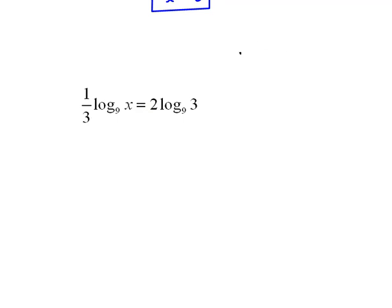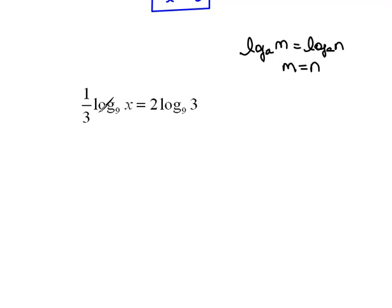Our rule says if we have log base a of m equal to log base a of n, then m has to equal n. But we don't have that in this case — we have 1/3 of the log equal to 2 times the log. We do have a rule, though, that says powers can be brought down in front as factors.